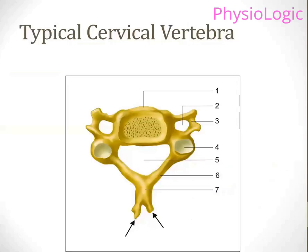This is a typical cervical vertebra. The area denoted by number five is the canal from where the spinal cord is passing. Anterior to that is the body of the vertebra, and posterior to that is the spinous process of the cervical vertebra. The focus right now is on the area through which the spinal cord passes.